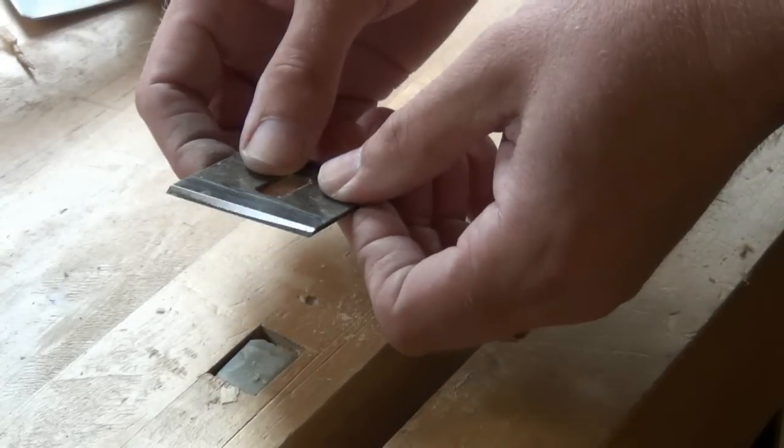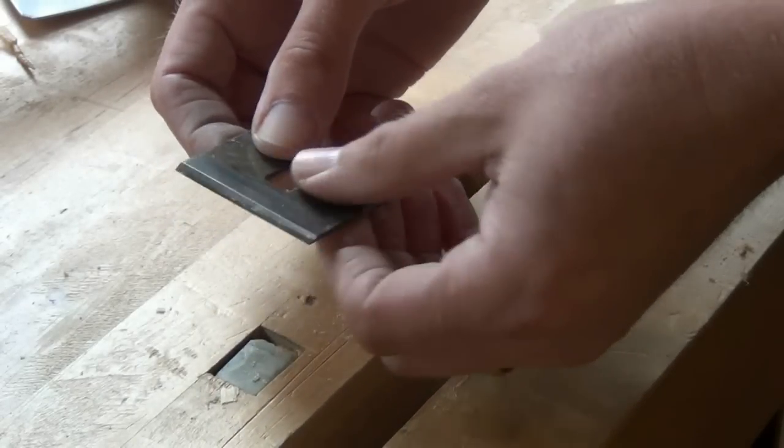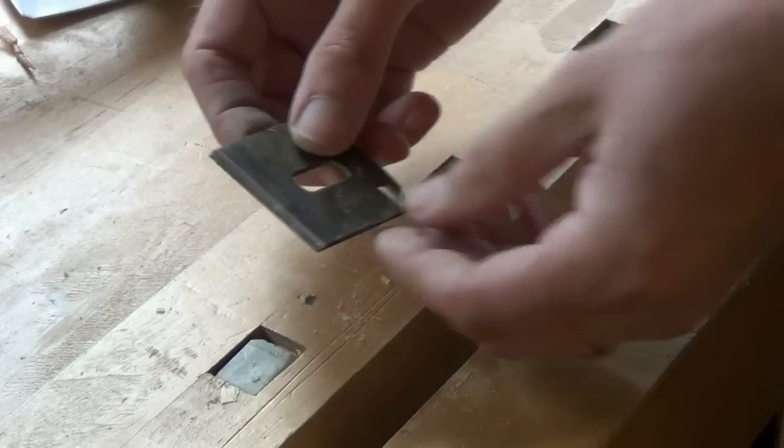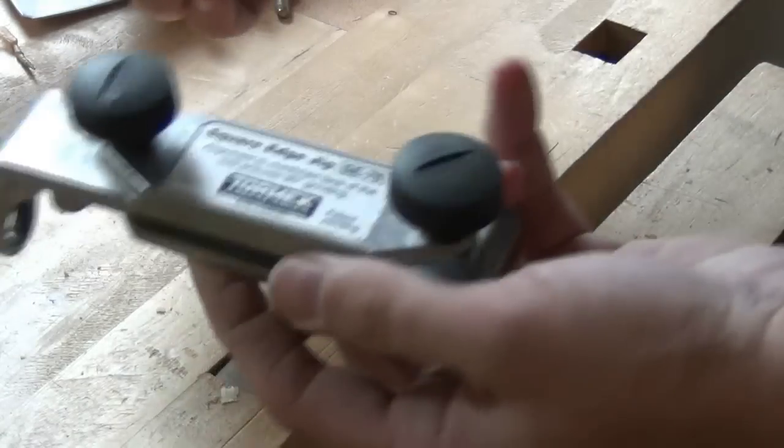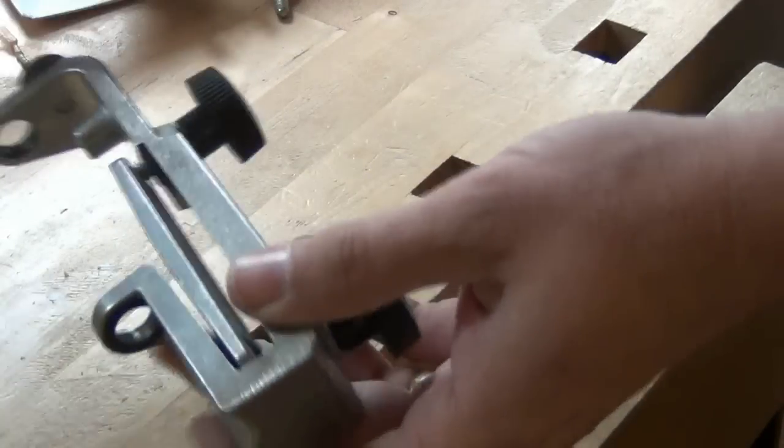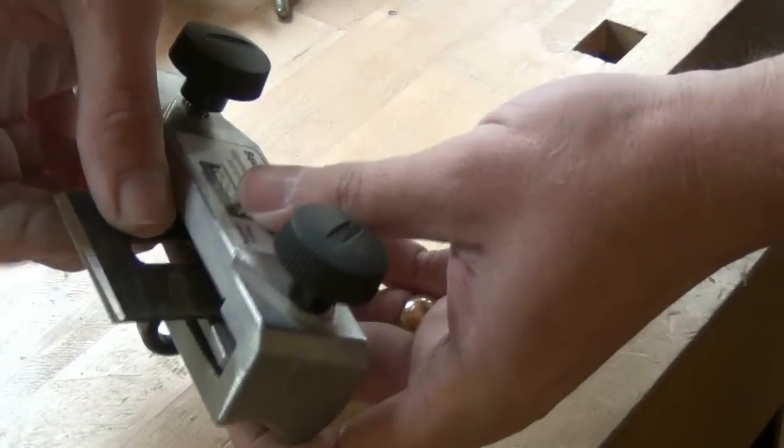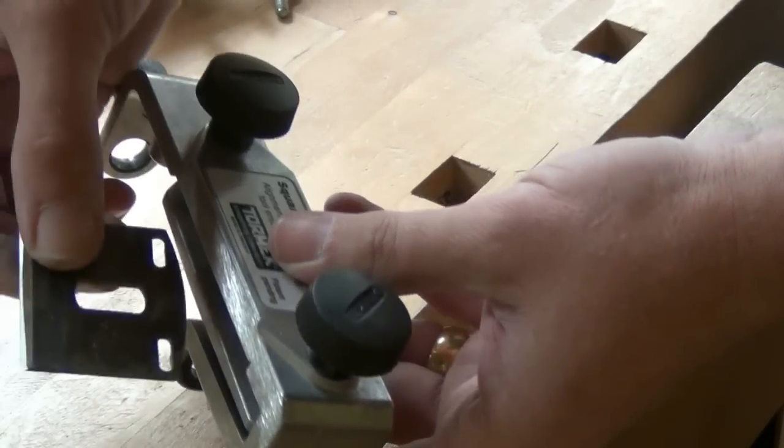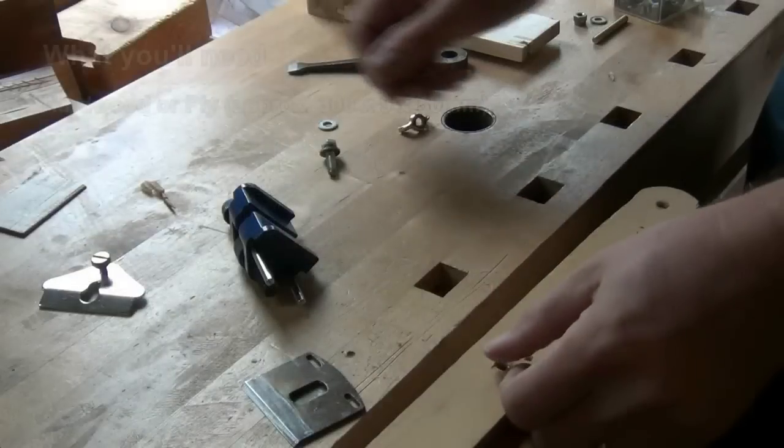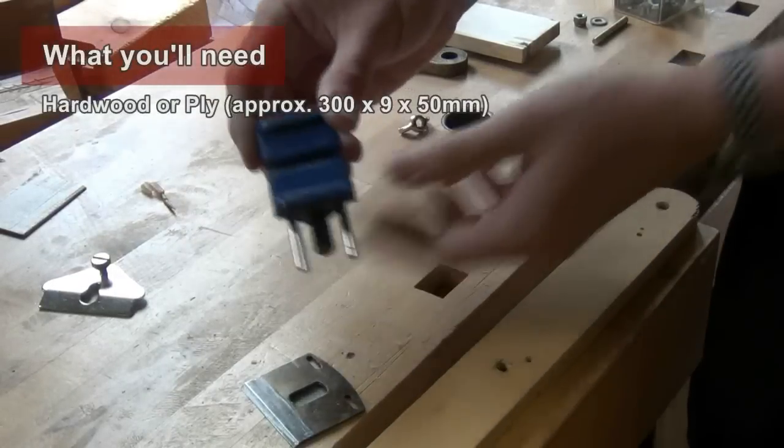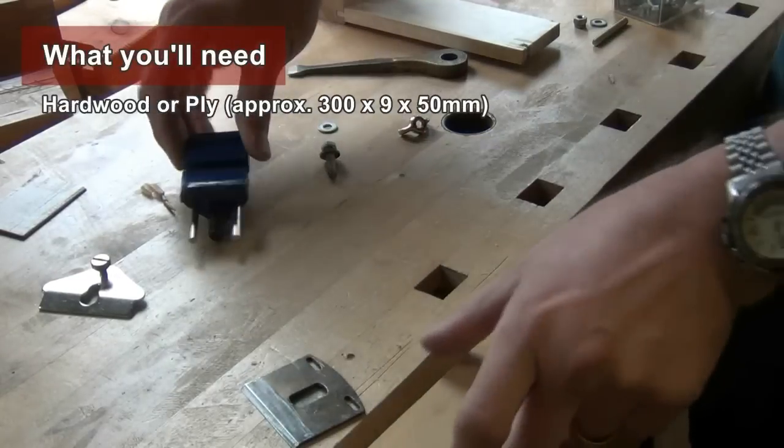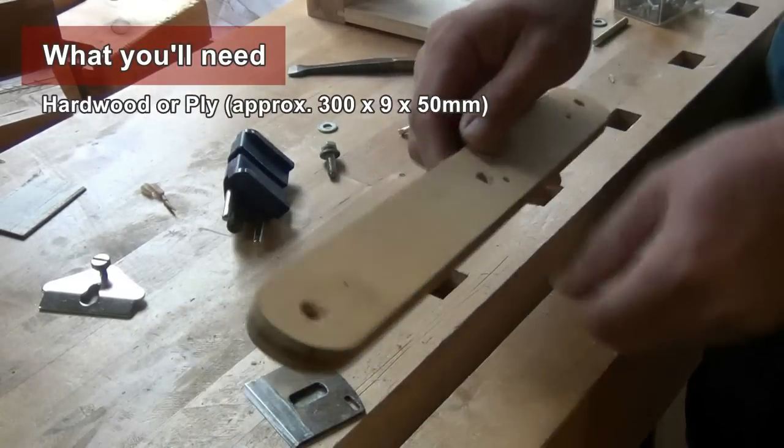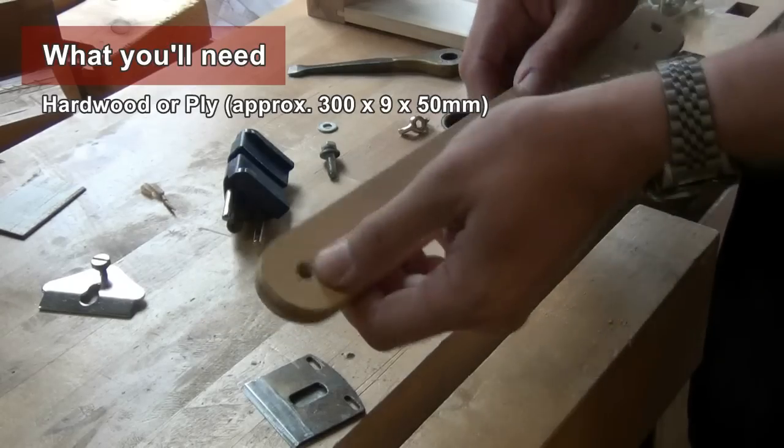But we still have a problem. Jigs for such grinders like this one need the iron to protrude about two inches, and it's just not long enough. I overcome the problem using one of these jigs and using a piece of ply with a hole in the end.